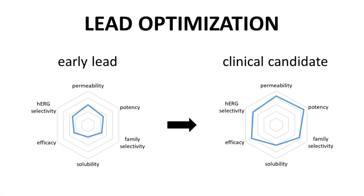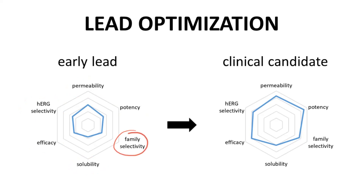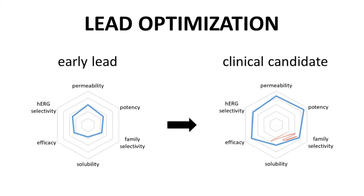The challenge for lead optimization is to improve the properties of compounds in the lead series. Those properties include potency and efficacy, properties related to PK like permeability and solubility, and properties related to safety like HERG binding and target selectivity. We can demonstrate this idea with a radar plot — the greater the area within the plot, the more optimized the lead has become.